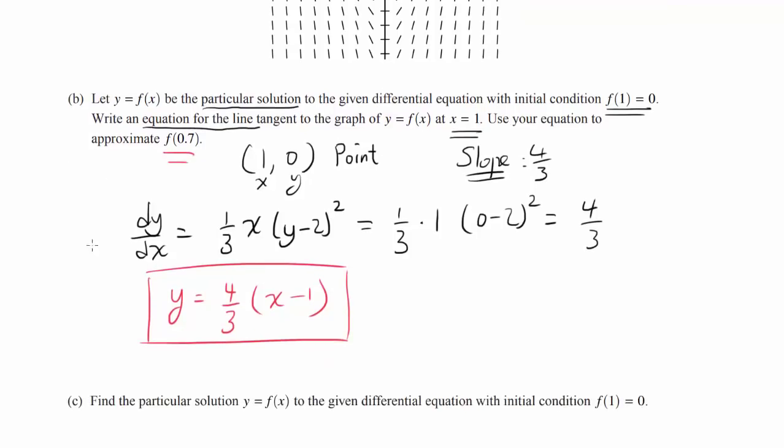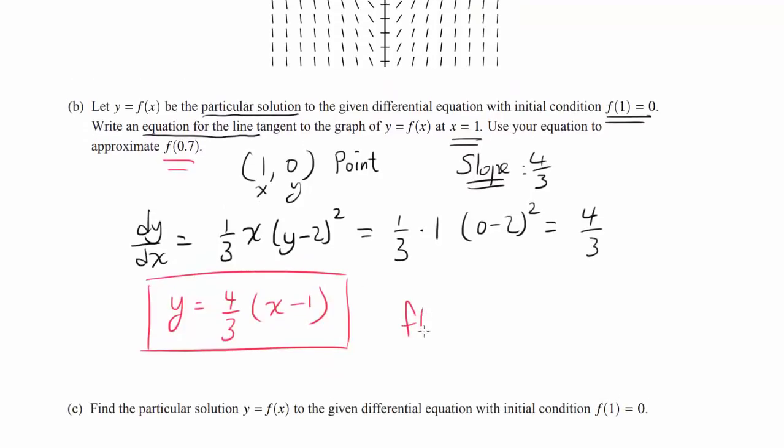Use your equation to approximate f(0.7). Well, f(0.7) using this equation is about (4/3)(0.7-1), or (4/3)(-0.3), or -0.4. So that's the answer to the second one.